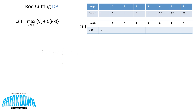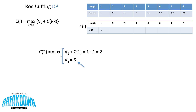Now let's move on to c(2). c(2) = max of v(k) + c(i − k) for k from 1 to 2. For k = 1, we have v(1) + c(2 − 1) = v(1) + c(1) = 1 + 1 = 2. For k = 2, that's just v(2) = 5, which we get from the top array. Since 5 is bigger than 2, our optimal solution for length 2 is equal to 5.